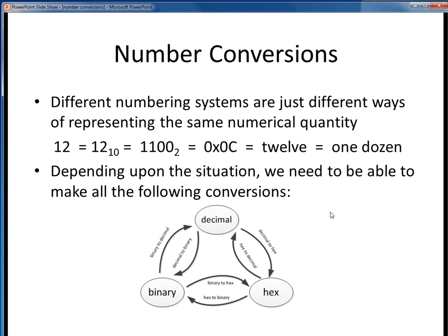The various numbering systems we've already considered are nothing but different ways of representing the same numerical quantity of something. For example, the number 12 could be expressed in any of these forms: decimal, binary, hex, or in words. Obviously, all of these represent the same quantity of something.